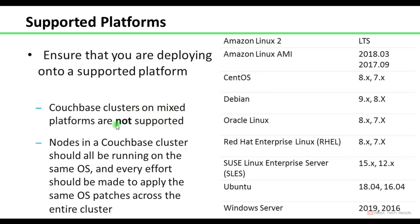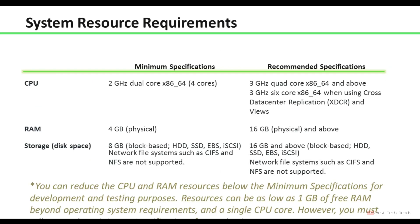Couchbase clusters on mixed platforms are not supported, and all nodes in a Couchbase cluster should be running on the same OS. CPU, RAM, and storage — these are the minimum and recommended specifications. You can reduce resources below the minimum for development and testing, as low as 1GB of free RAM and a single CPU core, but your cluster will respond very slowly. When planning for production clusters, take the recommended specifications into consideration.